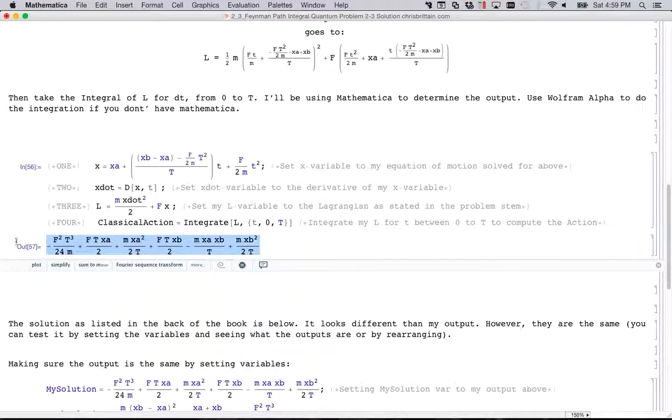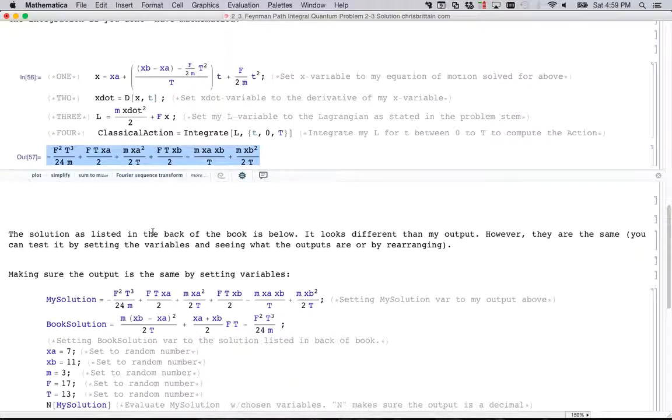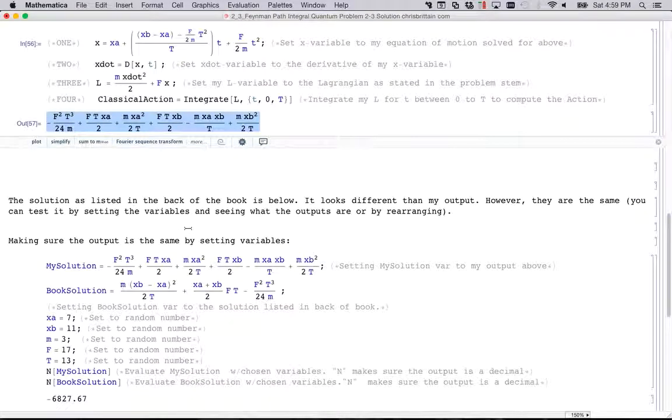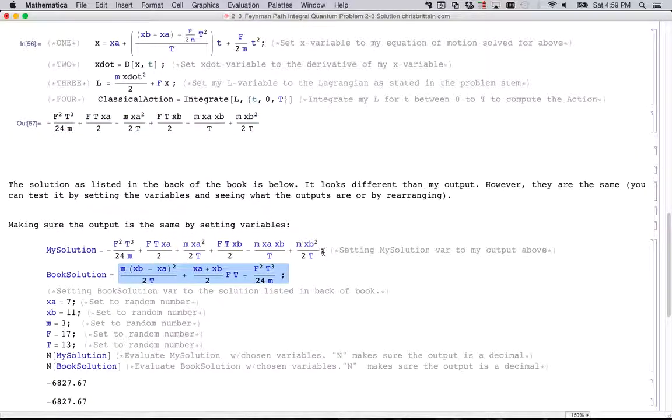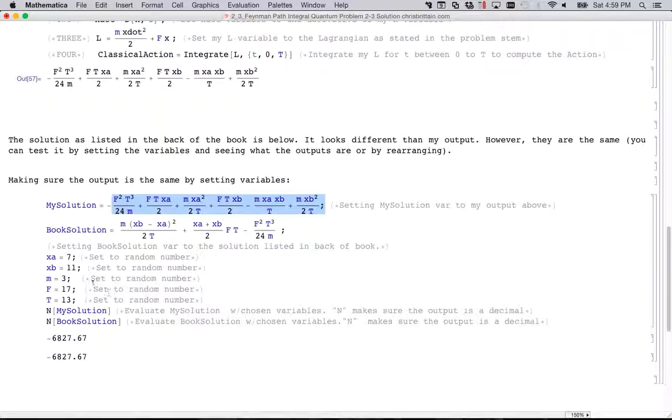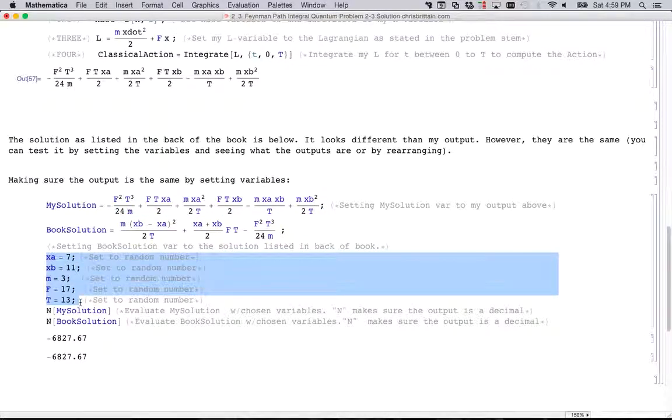So this is the answer. And it looks different from the solution at the back of the book, page 363. This is how he lists it, and this is how I list it. And it doesn't look right. But I checked. I set all my equations, I set all my variables to numbers, and then I just evaluated what they are. And they are, in fact, the same equation. So that's the answer.